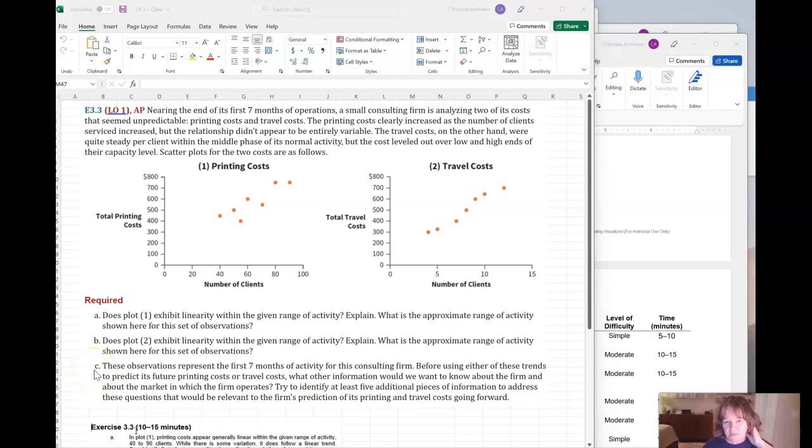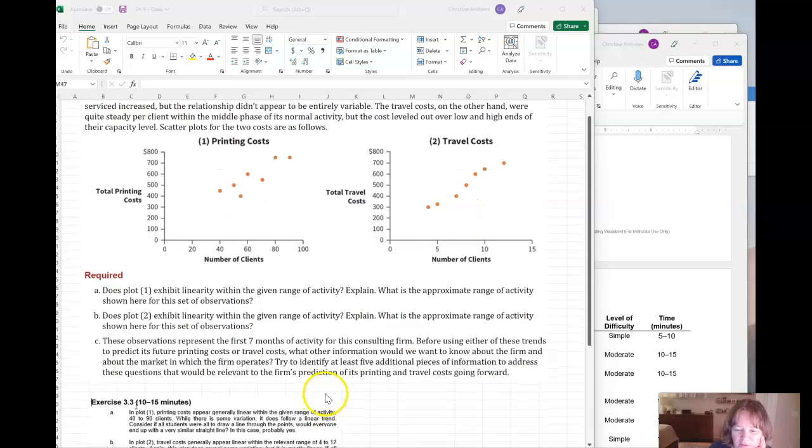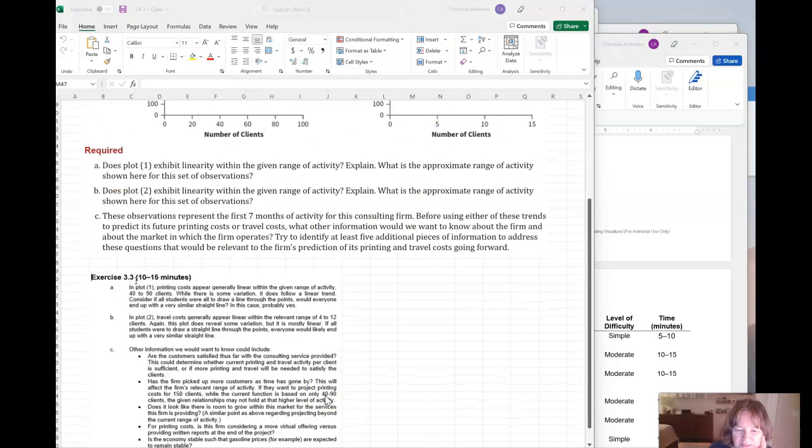This is the first exercise we did together in class, exercise 3.3. It has two scatter plots for printing costs and travel costs, and you have the actual solution down here from the textbook.